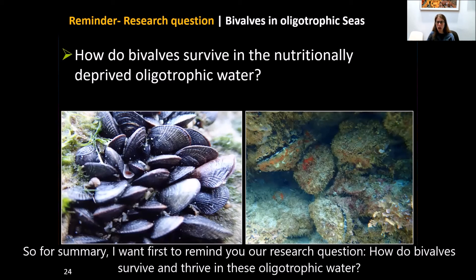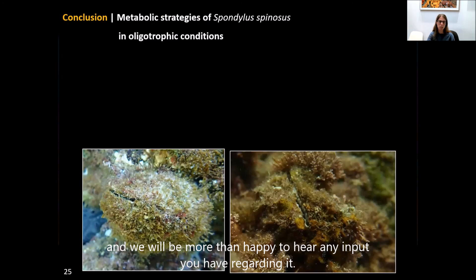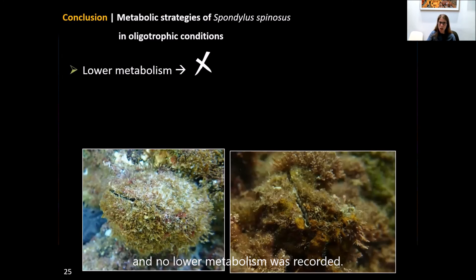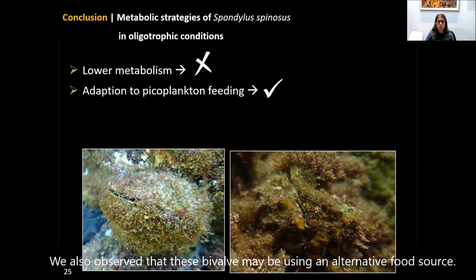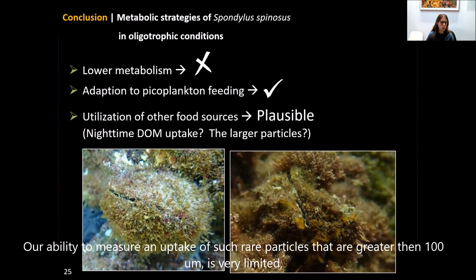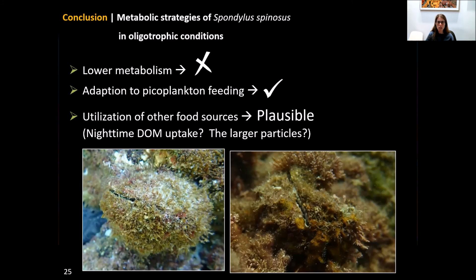In summary, our research question was: how do bivalves survive and thrive in oligotrophic water? Our findings suggest that the metabolic rates of the bivalves we studied are comparable to those living in more productive water — no lower metabolism was recorded. Unlike bivalves from productive water, the bivalves we studied can efficiently remove micron and sub-micron cells that dominate the oligotrophic water. We also observed that these bivalves may be using an alternative food source, potentially dissolved organic matter or rare large particles greater than 100 micrometers, though measuring uptake of such rare events requires further research.